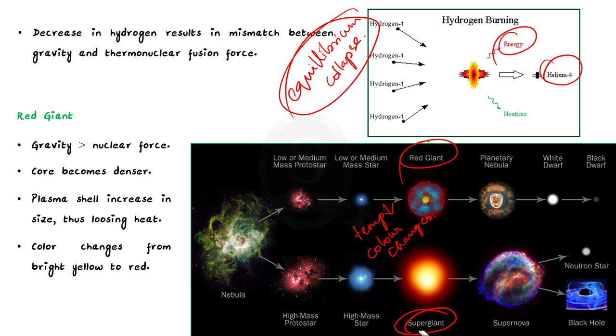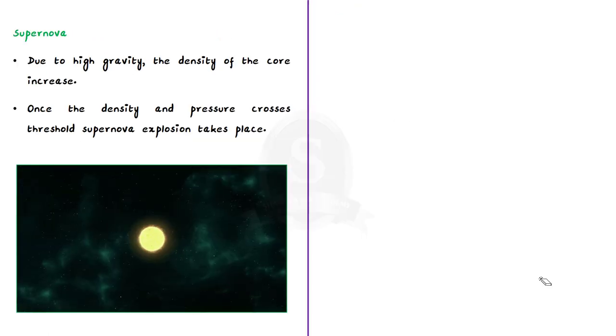As gravity takes over, the density of the supergiant's core keeps on increasing. This increase in pressure and density due to gravity finally results in a huge explosion. This explosion is a supernova.